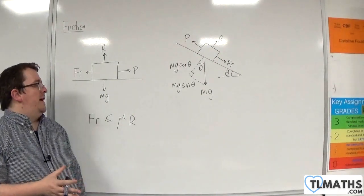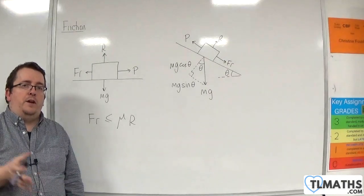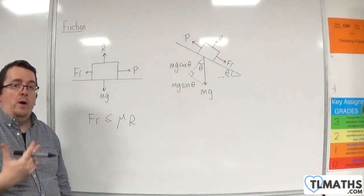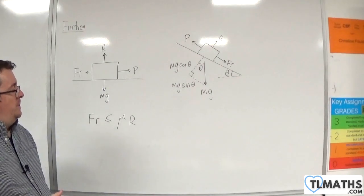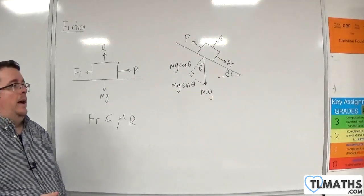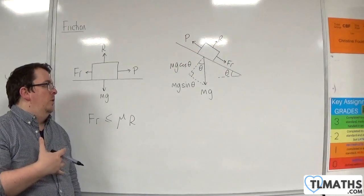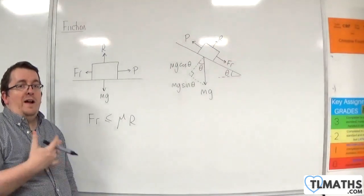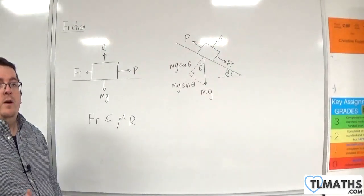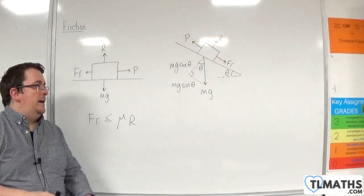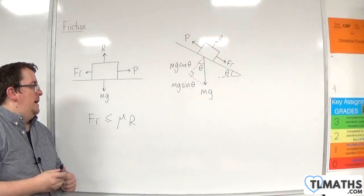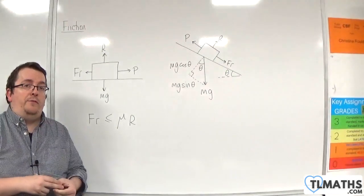And quite a common error is to think that the coefficient of friction has to be between 0 and 1. It doesn't. The coefficient of friction can be greater than 1. So, don't be worried if the value that you get is greater than 1 and you think, oh, that has to be wrong. It probably isn't wrong. But it just means that the surface is very rough.